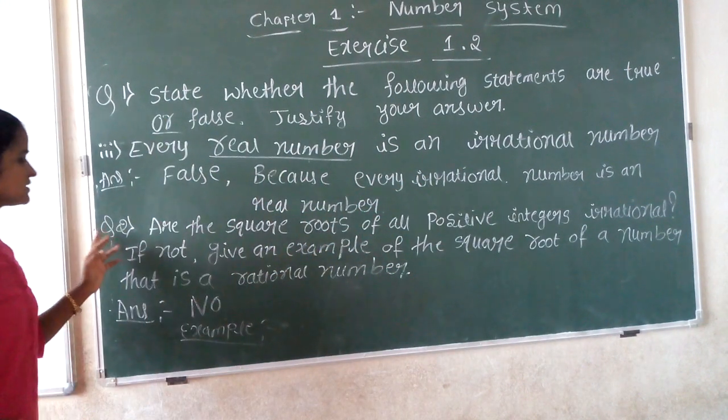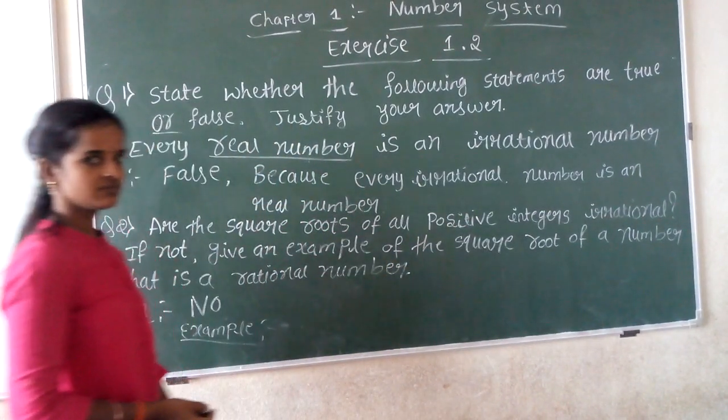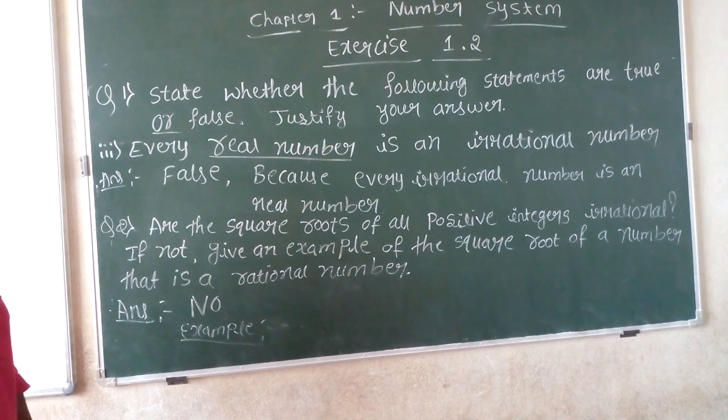Next question, question number 2: Are the squares of all positive integers irrational?